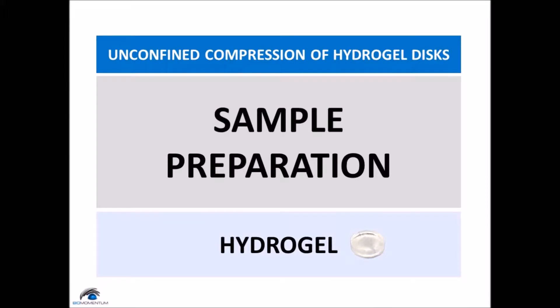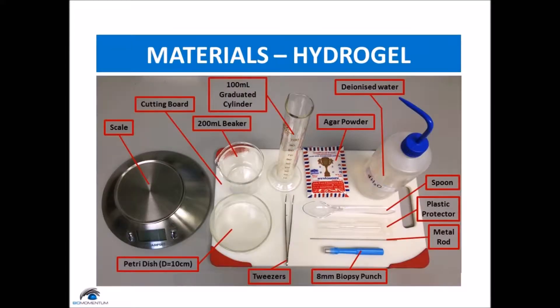For the hydrogel sample preparation, we will be using a scale, a cutting board, a petri dish, a 100 millimeter graduated cylinder, a 200 millimeter beaker, tweezers, agar powder, deionized water, spoon, a plastic protector, a metal rod, and an 8 millimeter biopsy punch.